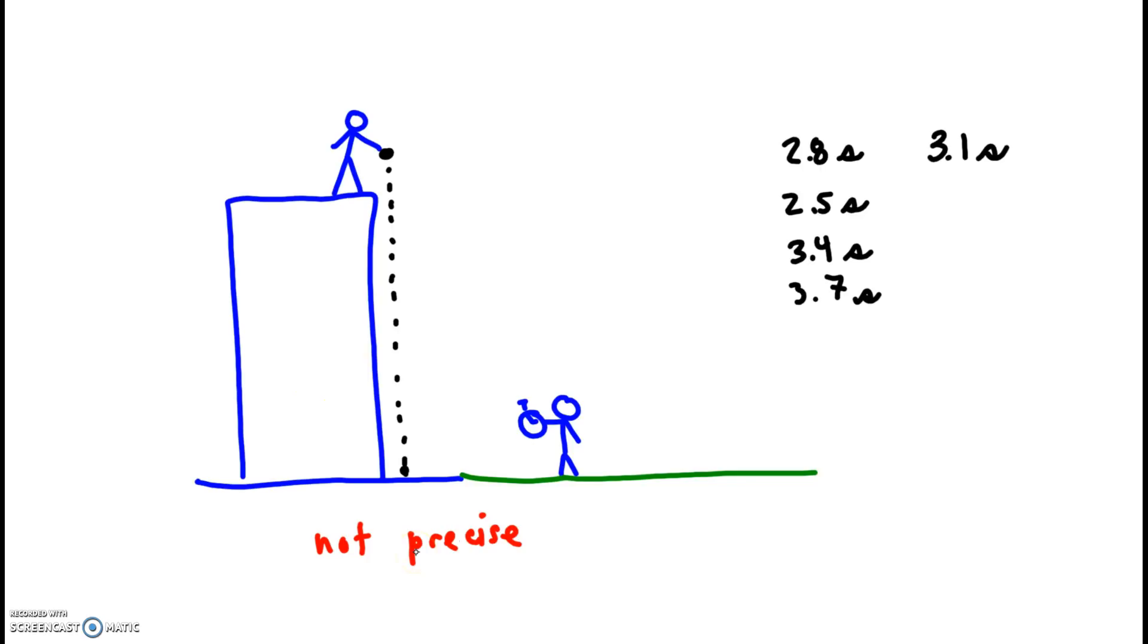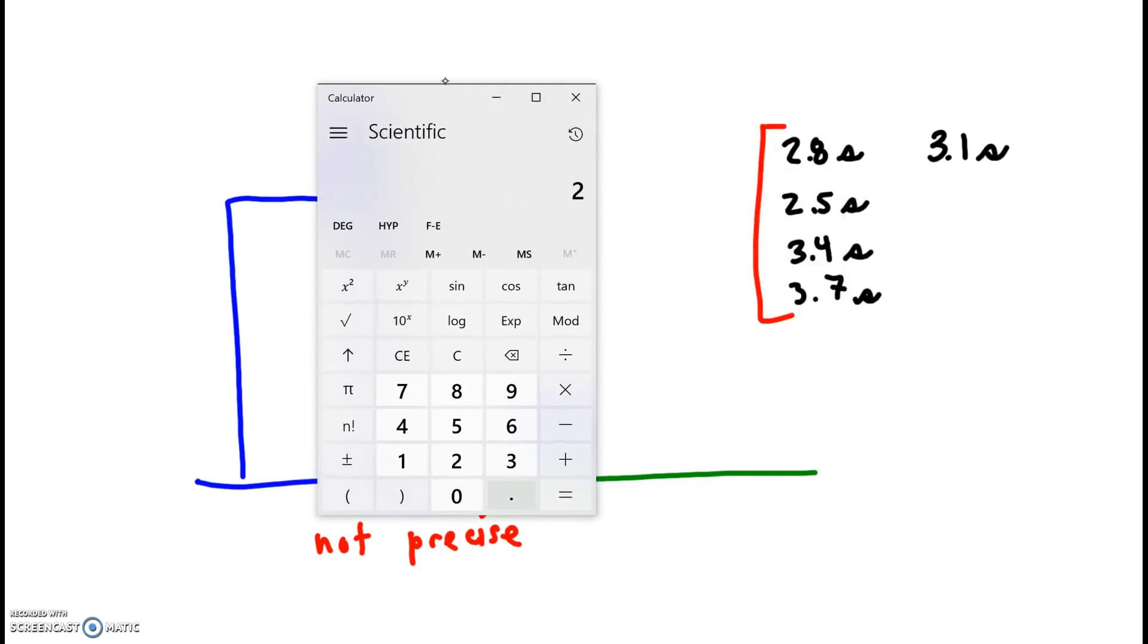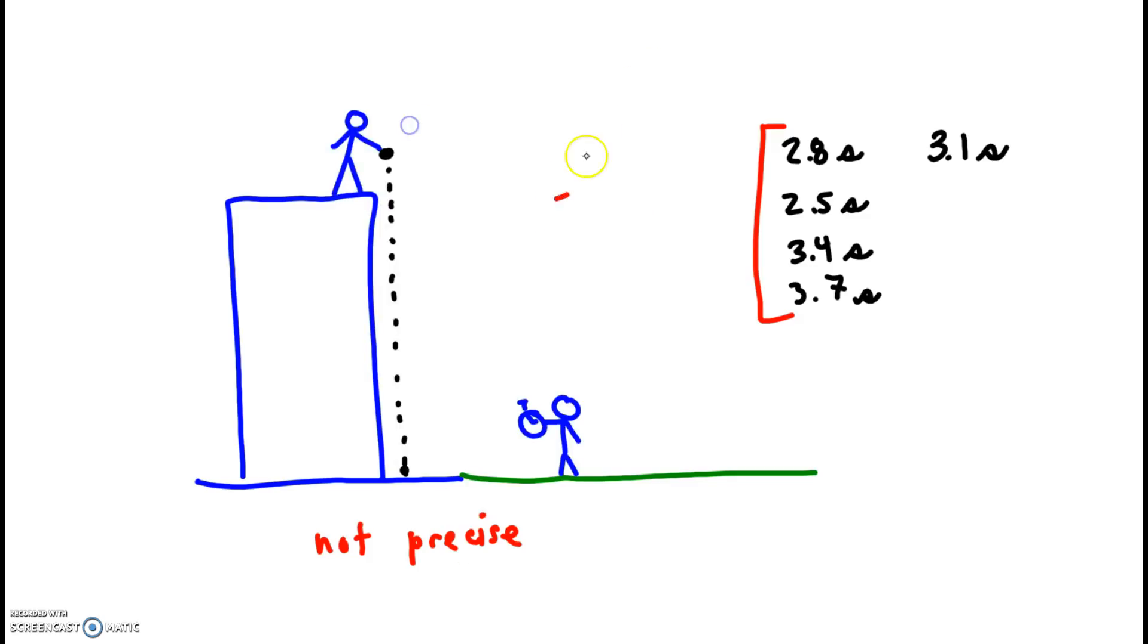Is it accurate? Well, consider this value, and this one. This one is too low, and these are too high. How can we figure out whether this is an accurate set of data? The trick we use is we take an average. So let's do this. 2.8 plus 2.5 plus 3.4 plus 3.7. Look at that. 3.1. The average time is right on the nose. Perfect. 3.1.